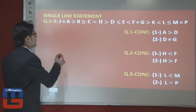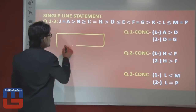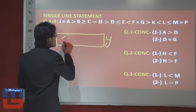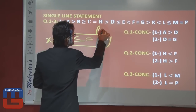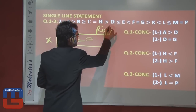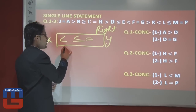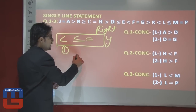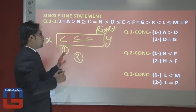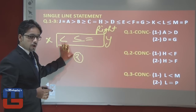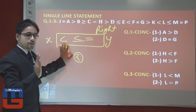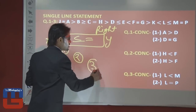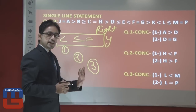If all the symbols between two elements are moving in the right direction, then the first priority should be less than (<). If less than is not present, the second priority should be less than or equal (≤). If both are absent, the third priority should be equal (=).